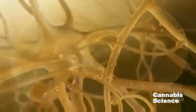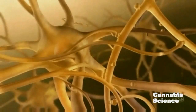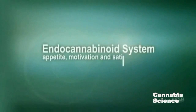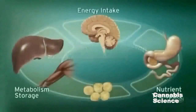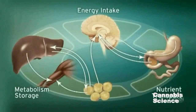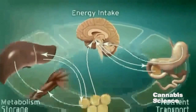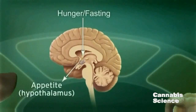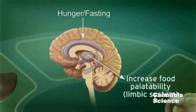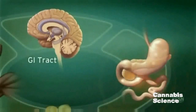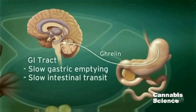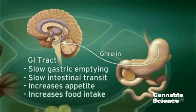In addition to acting as neural messengers, endocannabinoids mediate paracrine and autocrine signaling in adipocytes, hepatocytes and other cells. Endocannabinoid system activity in the central nervous system regulates food intake. ECS stimulation by hunger and fasting signals stimulates appetite and increases the palatability of food. Endocannabinoids slow gastric emptying and GI transit and appear to stimulate secretion of ghrelin, a neuropeptide that increases appetite and food intake.